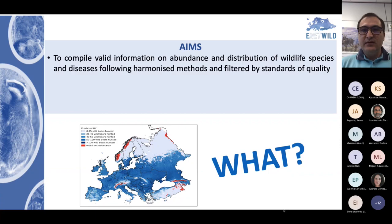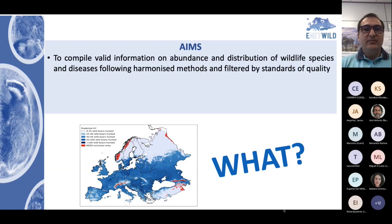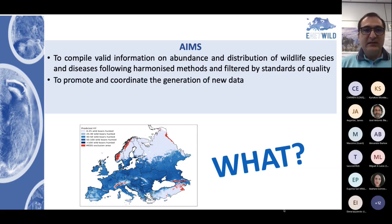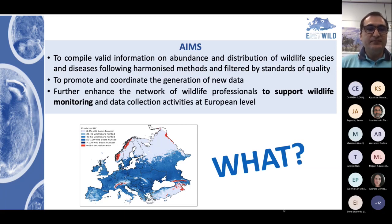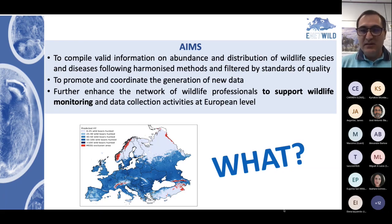This is a framework contract run by a consortium for the European Food and Safety Authority, and the main aim is to compile valid information on abundance and distribution of wildlife species, following harmonized methods filtered by standards of quality. We promote and coordinate the generation of new data, and we try to enhance the network of wildlife professionals to support wildlife monitoring and data collection activities at the European level.